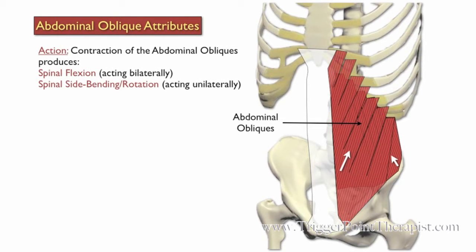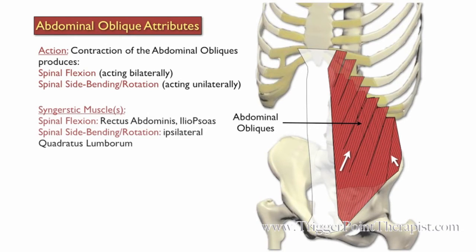Bilateral contraction of the abdominal obliques causes spinal flexion, and unilateral contraction causes side bending or rotation. The rectus abdominis and iliopsoas assist this muscle group in spinal flexion, and the ipsilateral quadratus lumborum assists during spinal side bending and rotation.